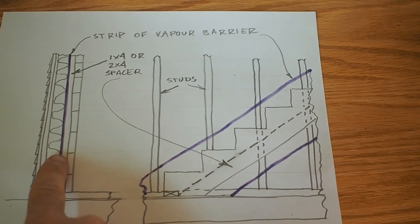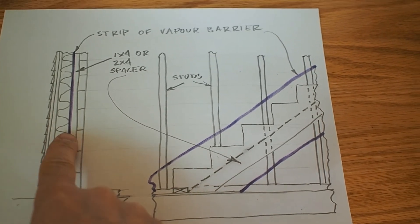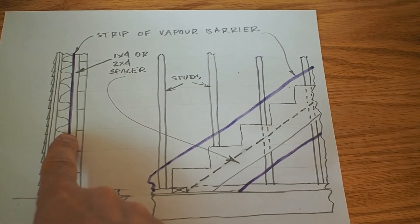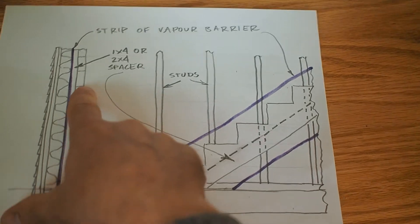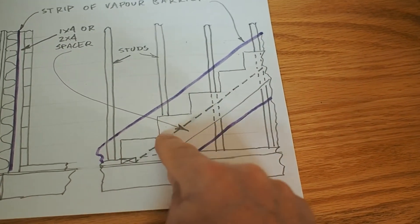This shows the cross section through the wall. The squiggly lines are the insulation. The purple line is the vapor barrier, and this step line is the stringer. This is a side view of the same thing. And as you can see, there's the steps.